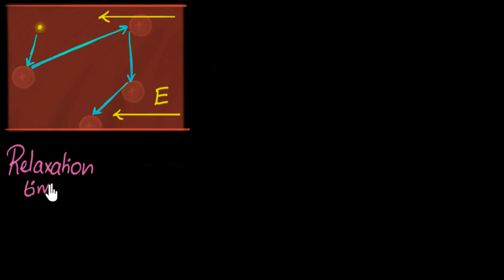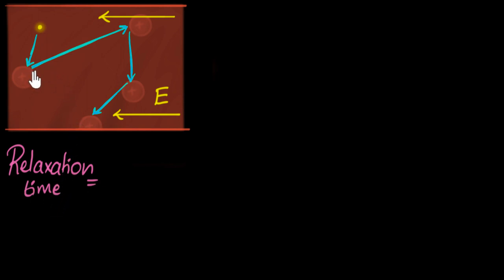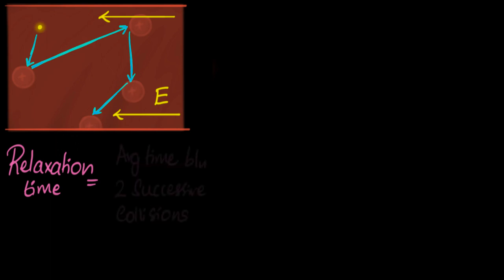The reason I'm defining relaxation time now is because this term will be important later on, and I don't want to introduce it in the middle of a derivation and distract ourselves. So what exactly is relaxation time? Electrons are constantly bumping into atoms. The time between the collisions is where we like to think that the electrons are relaxing — nicely drifting in the electric field. So relaxation time is the average time between two successive collisions.